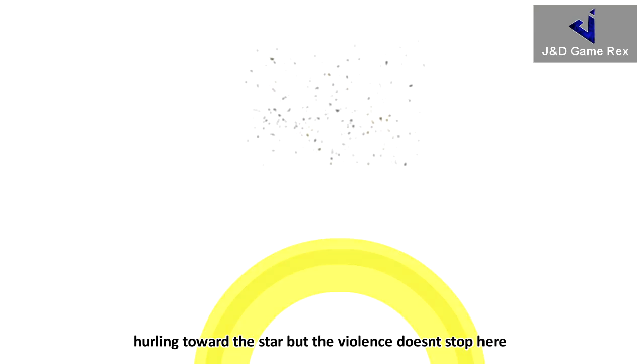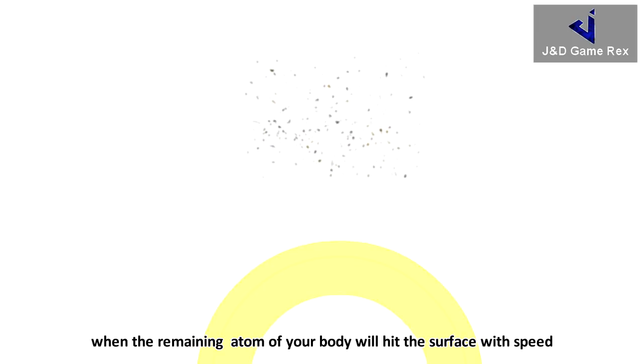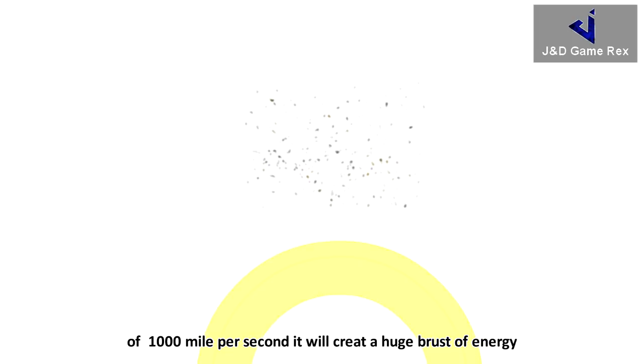But the violence doesn't stop here. When the remaining atoms of your body hit the surface with speed 1,000 miles per second, it will create a huge burst of energy. Anything, anyone that approaches a neutron star is destined for this catastrophic end.